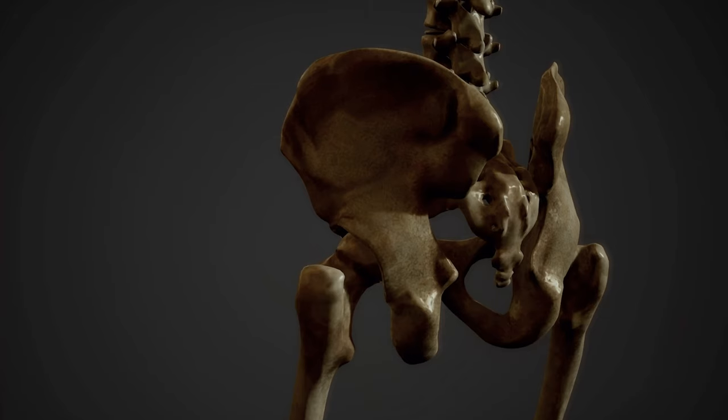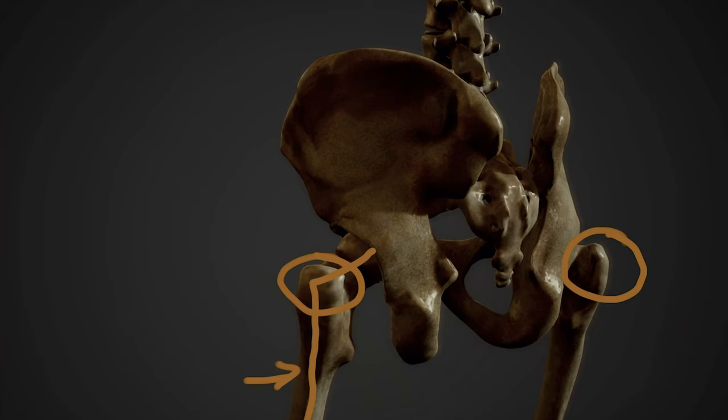We actually want to be placing the pelvic binder on the greater trochanter. The greater trochanter is part of the femur, which connects to the bottom of the pelvic girdle. By stabilizing around the greater trochanter, we push the bottom of the pelvis back together and hold everything in place, using the binder to stabilize as we move the patient.